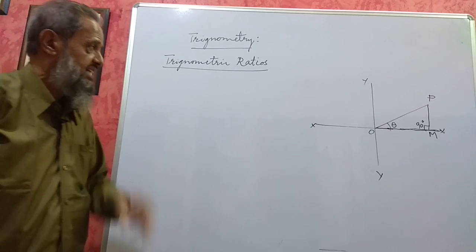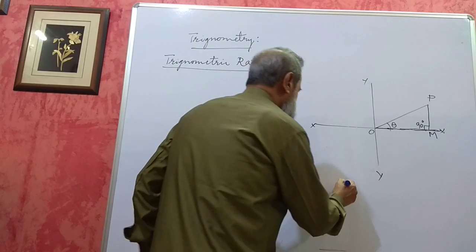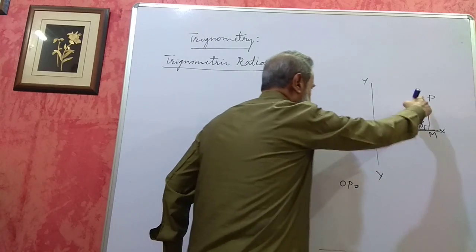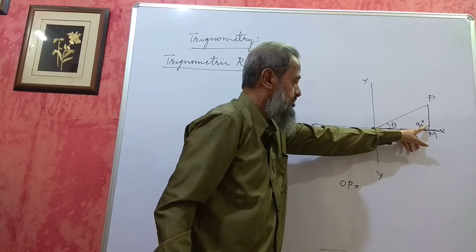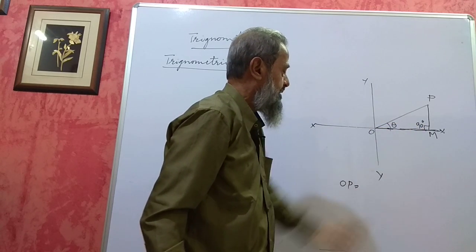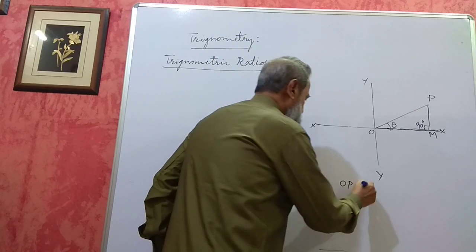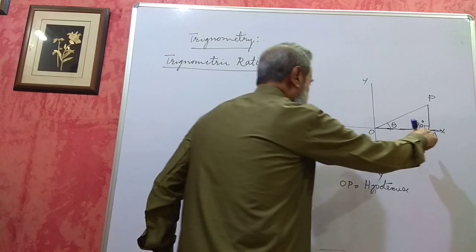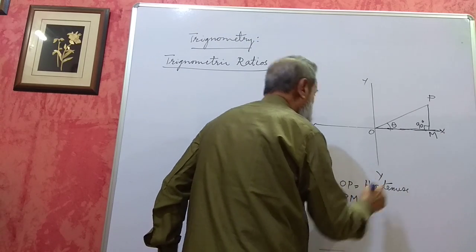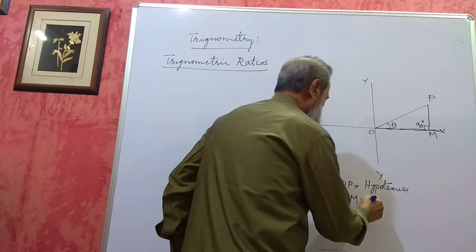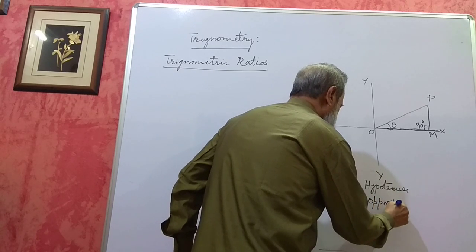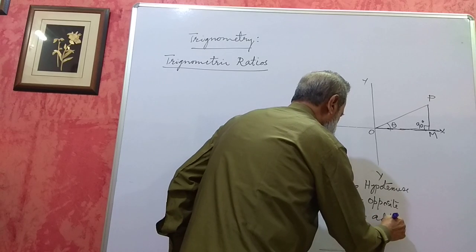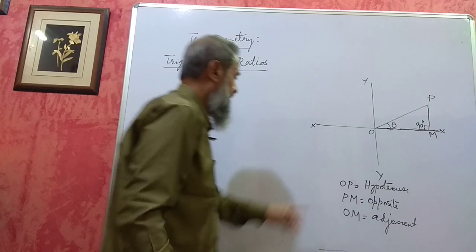This triangle has three sides. The three sides are OP, PM, and OM. OP is the longest side here in this triangle because this is the biggest angle. The side opposite to that angle is the biggest side, and this is called the hypotenuse of the triangle. PM is the side opposite to angle theta, so it is called the opposite side. With respect to theta, OM is called the adjacent side.